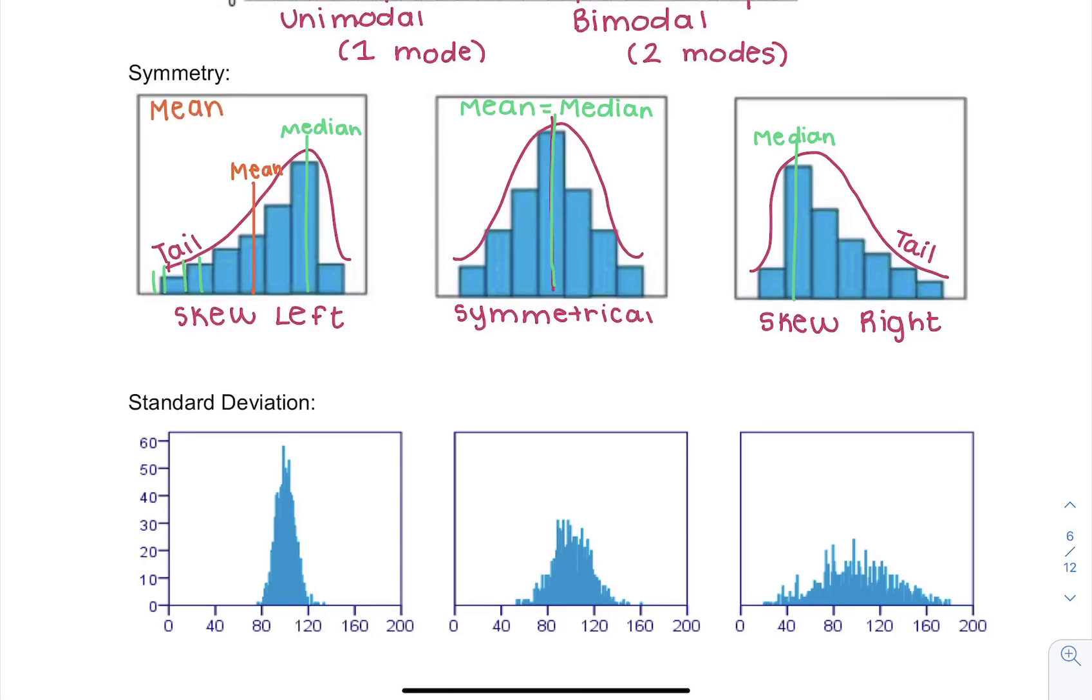So in this case, our mean is to the left of our modes, or mean is to the left of our median. So our mean is less than our median, which is why we say skewed to the left. Our mean gets skewed towards the left or towards the tail.